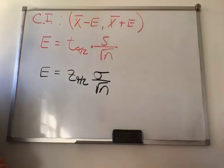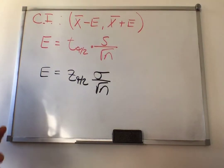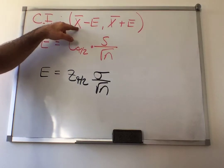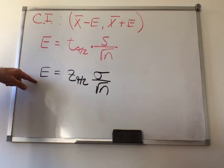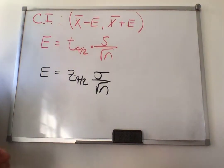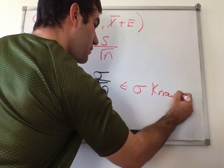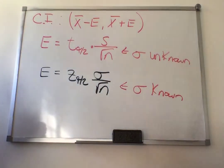Comparing to the formula from the last section — z of alpha over 2 times the population standard deviation divided by the square root of n — the formulas look exactly the same. The process of constructing confidence intervals is very procedural: get your point estimate, calculate your error using the appropriate distribution formula, then do x-bar minus error to x-bar plus error. The key difference: this formula is for sigma known, and this one is for sigma unknown.